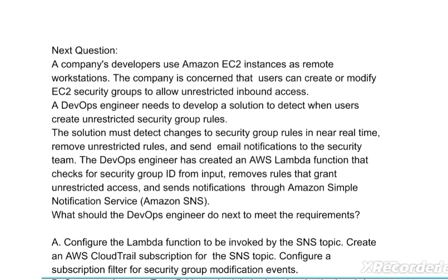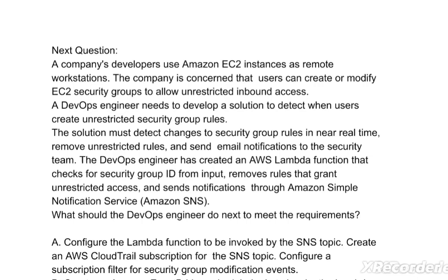A company's developers use Amazon EC2 instances as remote workstations. The company is concerned that users can create or modify EC2 security groups to allow unrestricted inbound access. A DevOps engineer needs to develop a solution to detect when users create unrestricted security group rules. The solution must detect changes to security group rules in near real time, remove unrestricted rules, and send email notifications to the security team. The DevOps engineer has created an AWS Lambda function that checks for a security group ID from input, removes rules that grant unrestricted access, and sends notifications through Amazon Simple Notification Service.